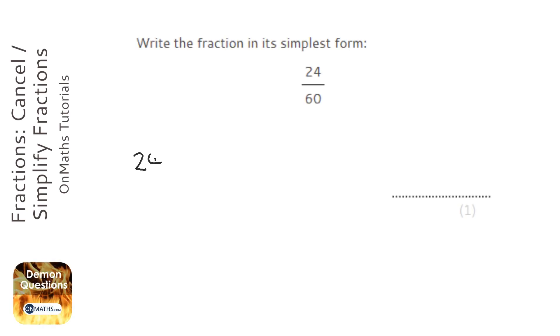So to cancel a fraction down into its simplest form, we've got to find something that we can divide top and bottom by. And you have to make sure that you can divide top and bottom.